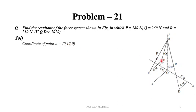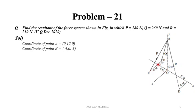Next, point B is in the X-Z plane, so the Y coordinate will be 0. The Z axis component is in the negative direction and X axis component is also in the negative direction. The coordinate of B will be (-4, 0, -3). Point C is again on the X-Z plane, so Y coordinate will be 0. The X coordinate is -4 and Z coordinate is 6, giving C as (-4, 0, 6).